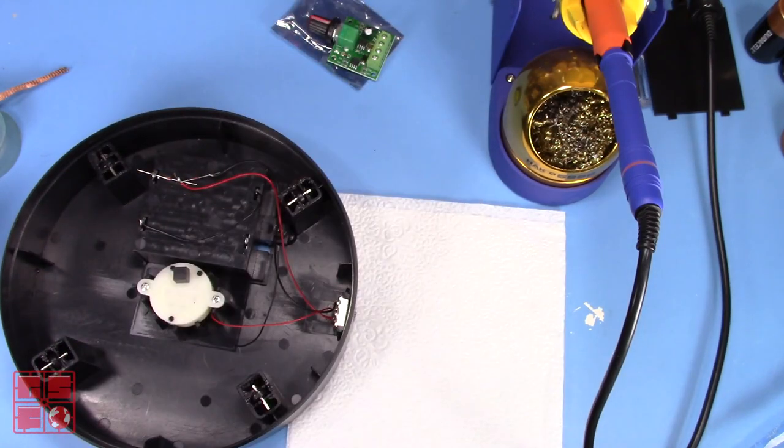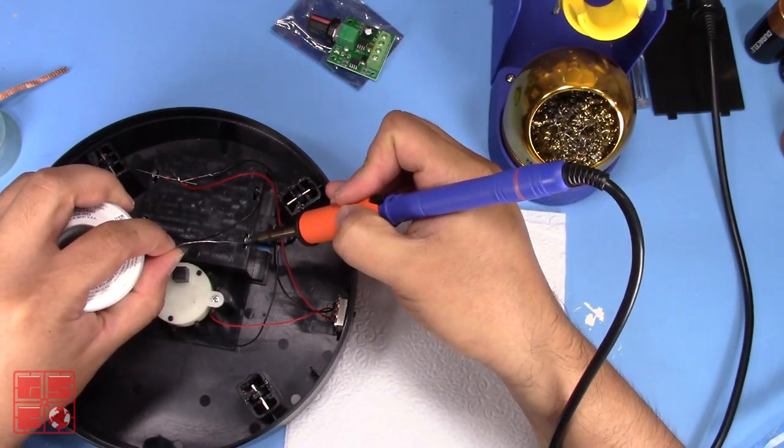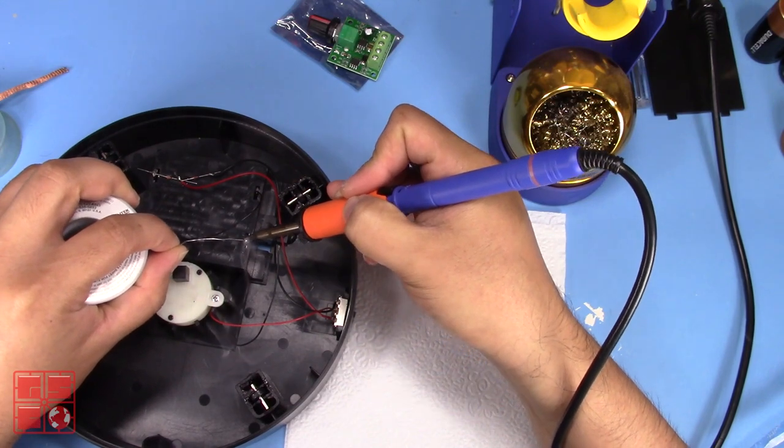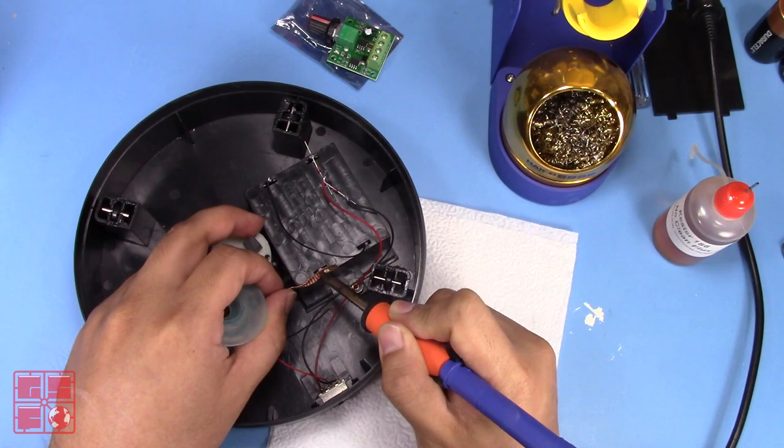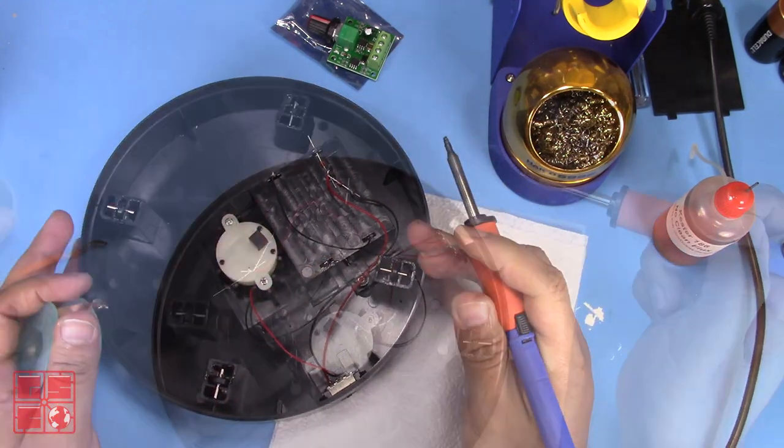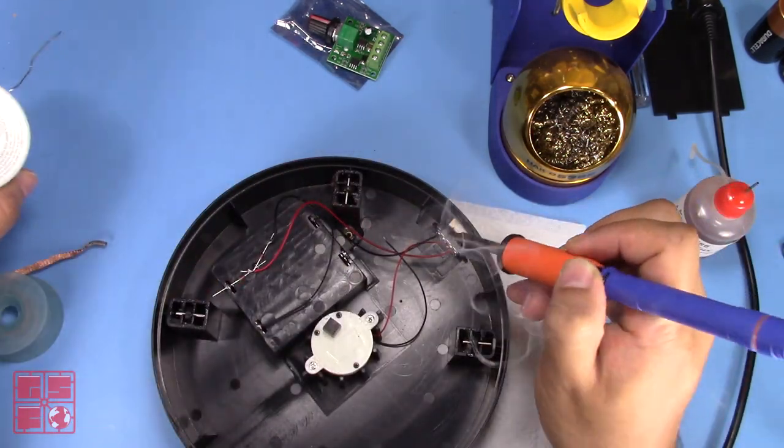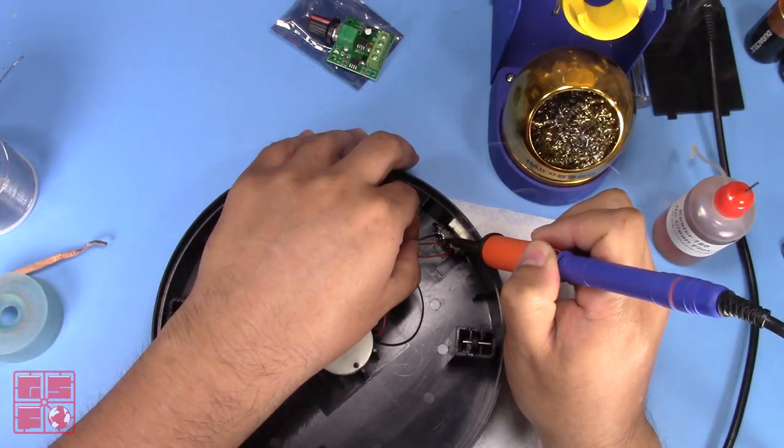Before soldering, I like to put on my mask as I don't want to be breathing in this resin smoke. I flow a bit of new solder and use a desoldering braid to clean up the tab. Next, I desolder the motor's positive lead from the old power switch.